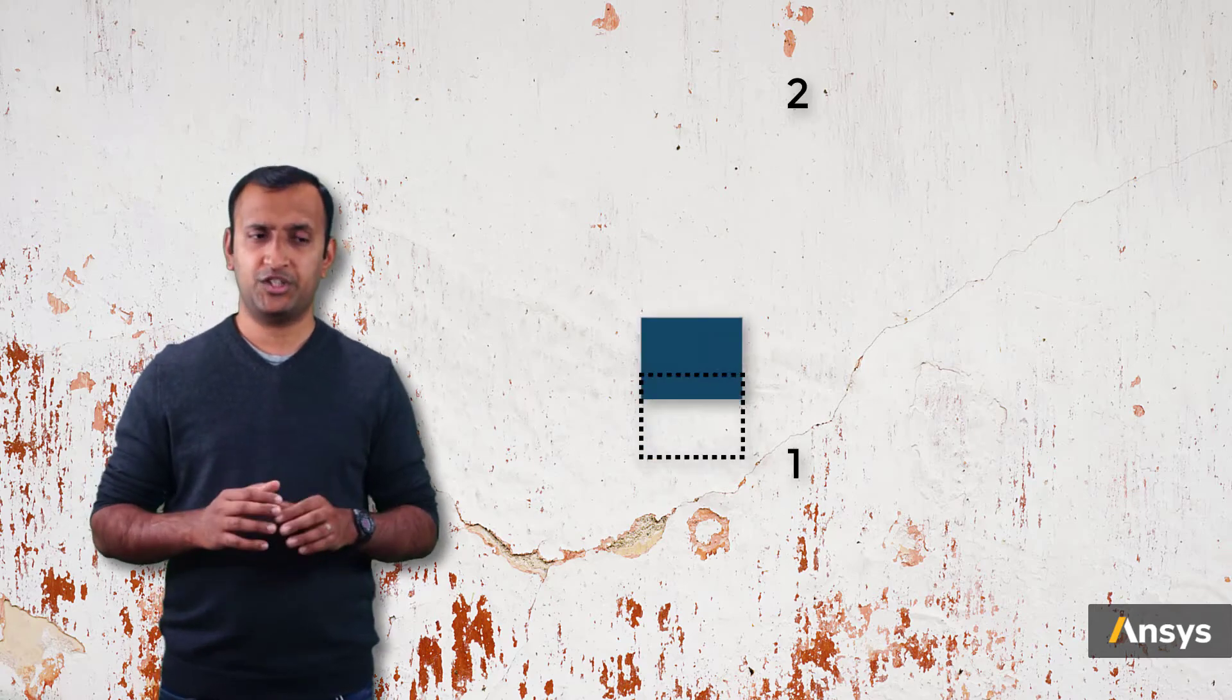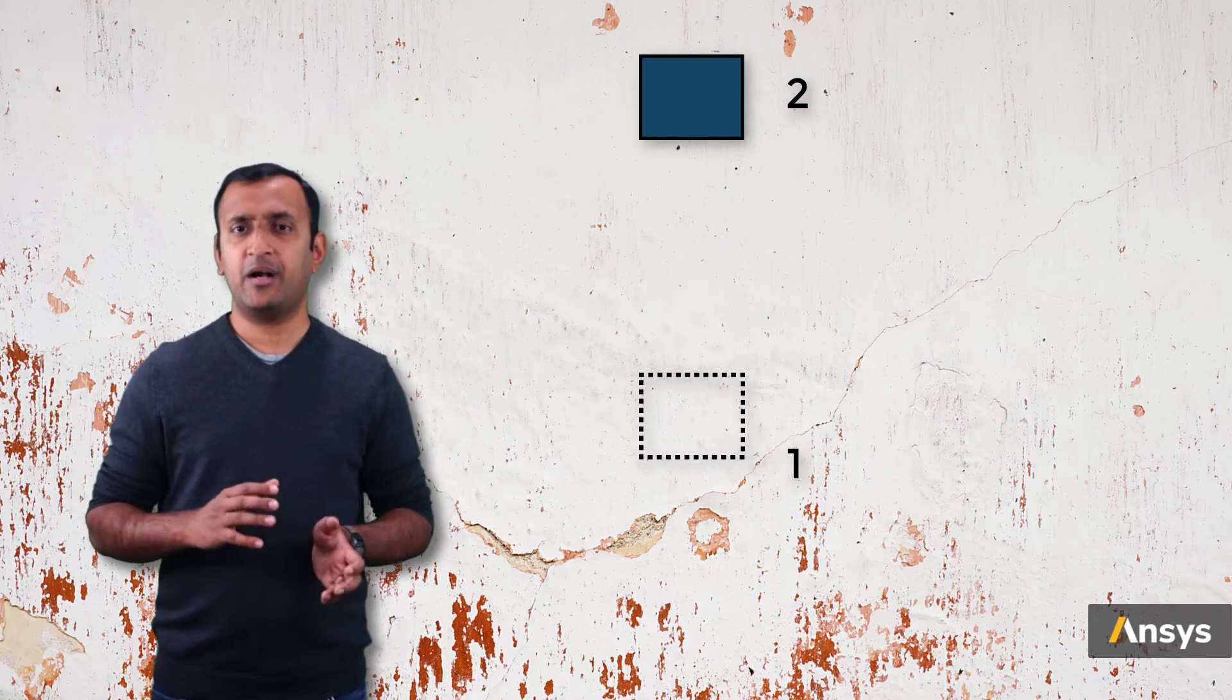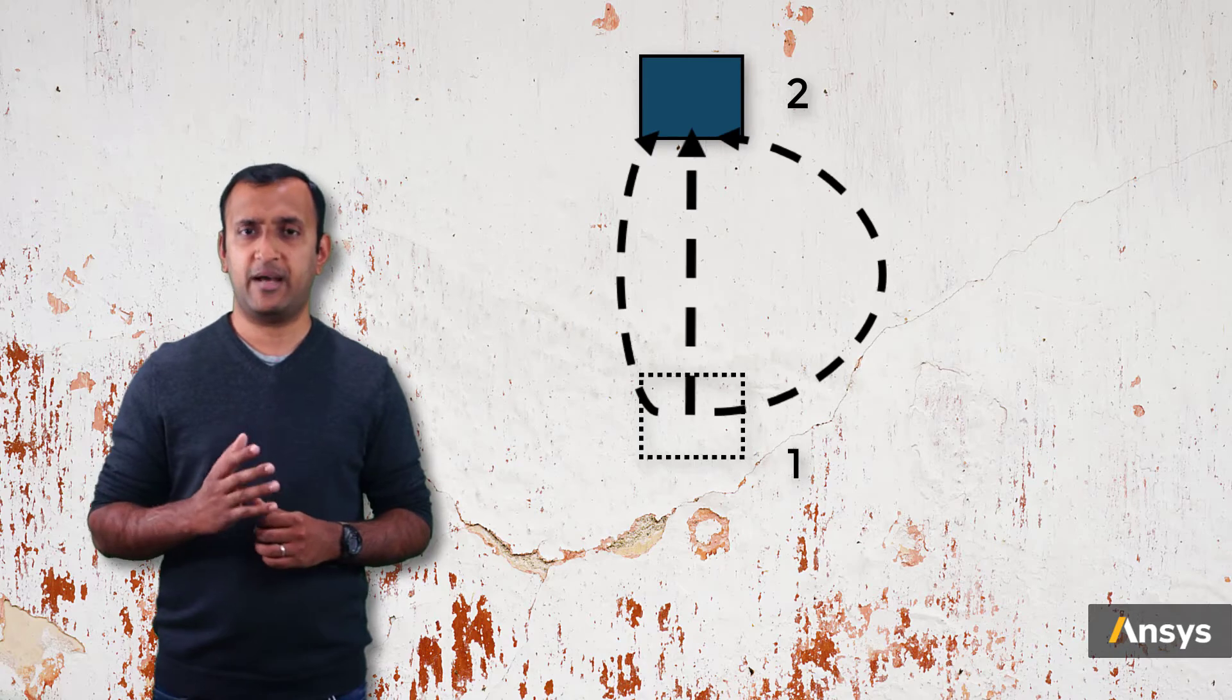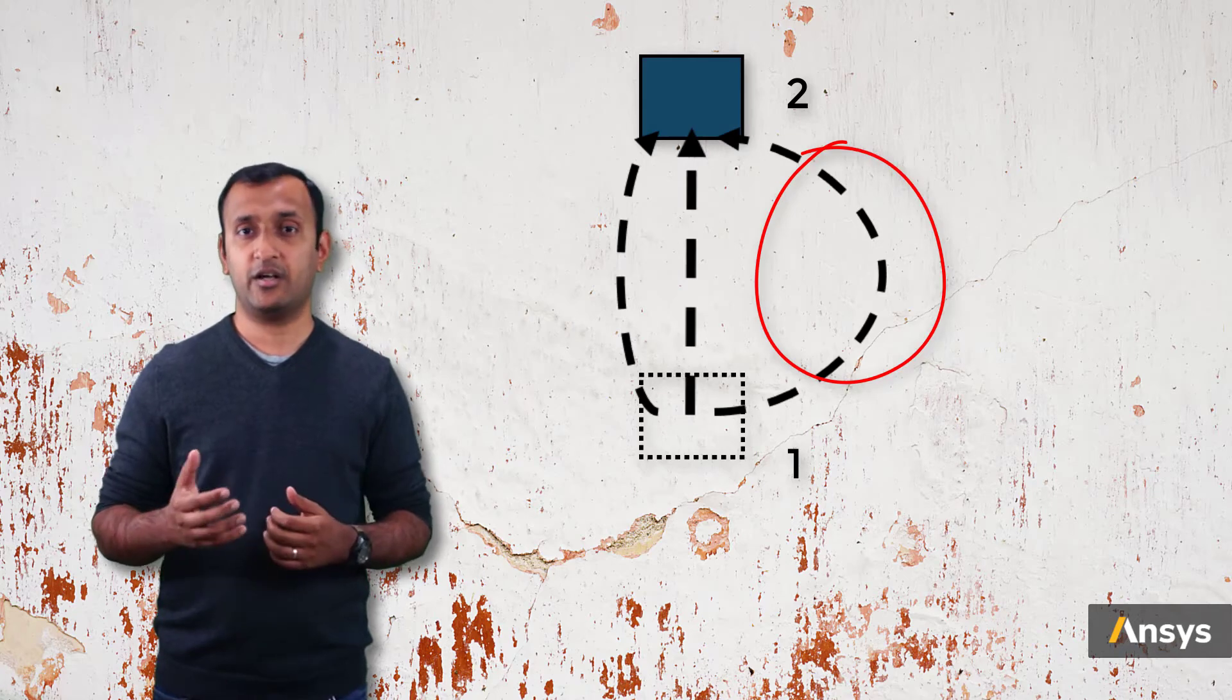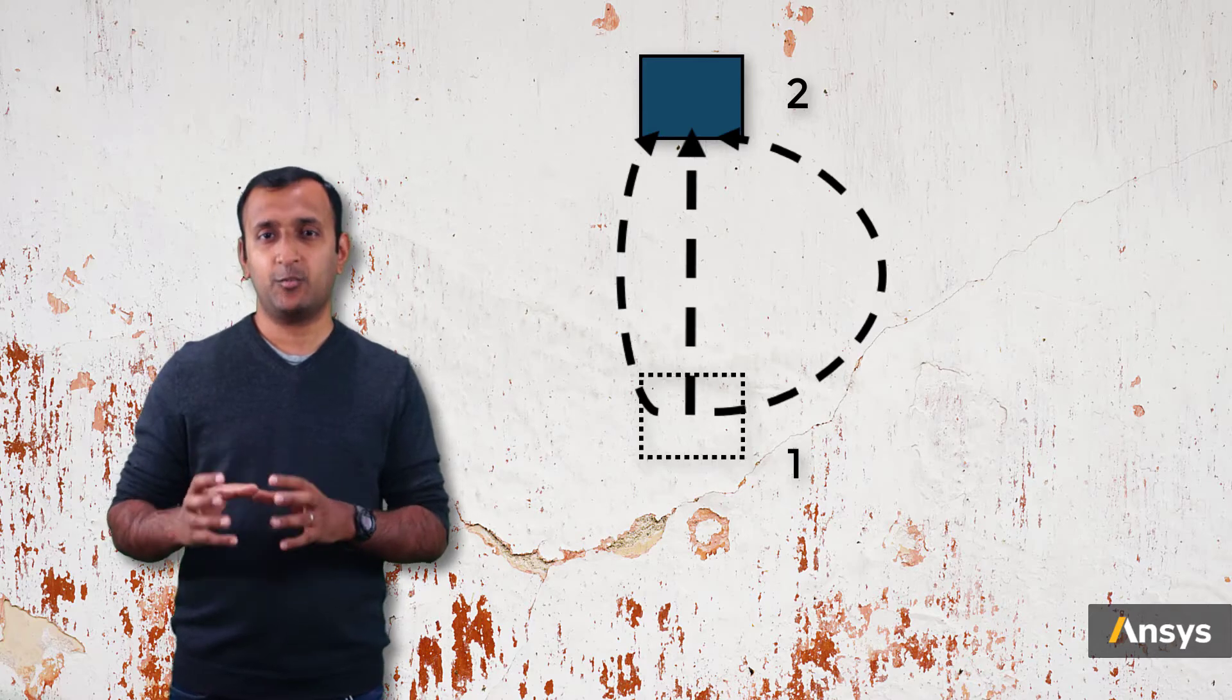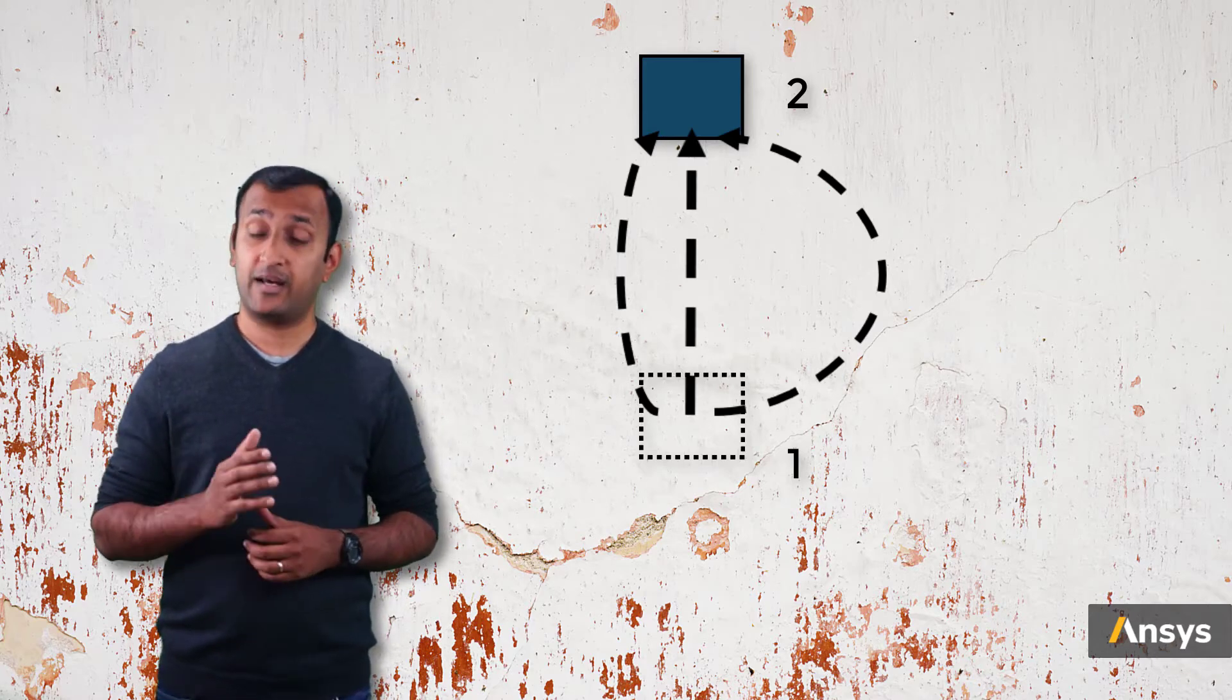To explain the meaning of path dependence, let's look at this block that moves from position 1 to position 2. In its journey, it can take multiple paths, but let's concentrate on these three paths. Path 1 is the shortest path, and path 3 is the longest path between these three paths. So the system loses smallest amount of energy in path 1, and most energy is lost in path 3.